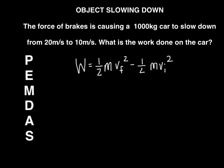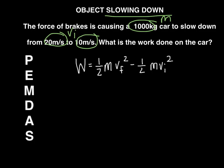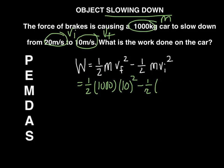Now let's look at an example where an object slows down. The force of brakes is causing a 1,000 kg car to slow down from 20 m/s to 10 m/s. What is the work done on the car? The mass is 1,000 kg, initial velocity is 20 m/s, and final velocity is 10 m/s. Plugging in: one-half times 1,000 times 10 squared, minus one-half times 1,000 times 20 squared.